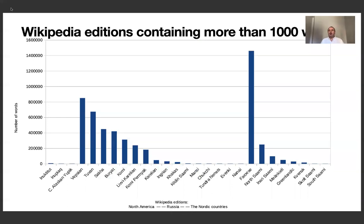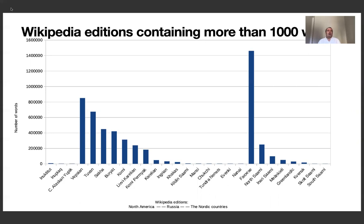So let's have a look at the Wikipedia editions containing more content. I stop counting articles and instead count words, because word count would be a more reliable measure. I've shown Wikipedia editions with more than a thousand words: to the left for North America, then for Russia, and then for the Nordic countries. These three groups are extremely different. First, North America — almost no content. Then Russia: seven Wikipedias with between 200,000 and 800,000 words — a very coherent field, quite similar. Then going to the Nordic countries, we have one outlier, which is Faroese, with 1.4 million words. North Sami and to a certain extent Inari Sami, with approximately 100,000 words, come in as group number two, whereas the rest are again quite marginal.